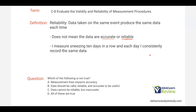So if I measure sneezing 10 days in a row and each day I consistently record the same data, that's reliable. Question: which of the following is not true? A: measurement bias impacts accuracy — absolutely true. B: data should be valid, reliable, and accurate to be useful — absolutely true, you want all three. C: data cannot be reliable but inaccurate. Can data be reliable but lack validity and accuracy? Absolutely — one does not guarantee the other two will occur. So C is not true.